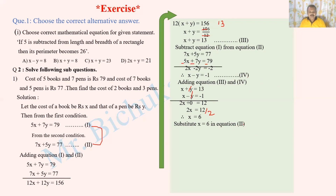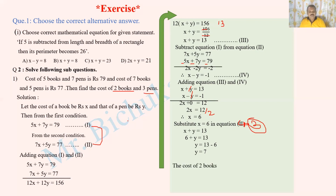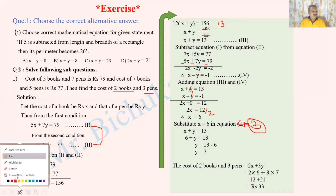Substitute x equals 6 in equation number 3: x plus y equals 13, so 6 plus y equals 13, therefore y equals 7. The cost of one book is rupees 6 and the cost of one pen is rupees 7. The cost of two books and three pens is 2 times 6 plus 3 times 7 equals 12 plus 21 equals 33.